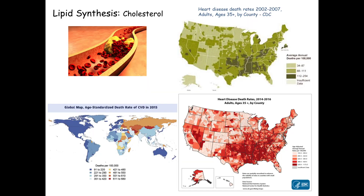Let's start with a little chart here about heart disease. On the top right here is a chart I pulled from the CDC that lists the heart disease death rates from 2002 to 2007 for adults ages over 35. If you look at the color coding, a lot of the darker colors mean 112 to twice that annual deaths per 100,000 individuals, and it's centered on the South, in particular the entire state of Mississippi.